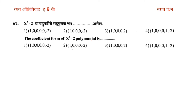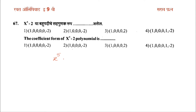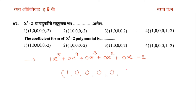The coefficient form of x raised to 5 minus 2 is: x raised to 5 plus 0 into x raised to 4 plus 0 into x cubed plus 0 into x squared plus 0 into x minus 2. In this form the variable is written in descending order of power.